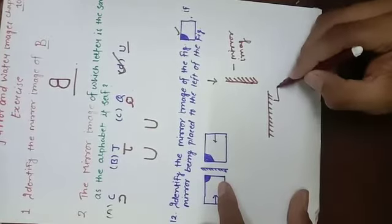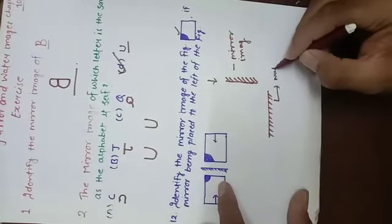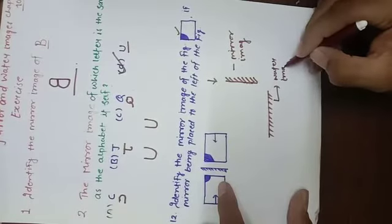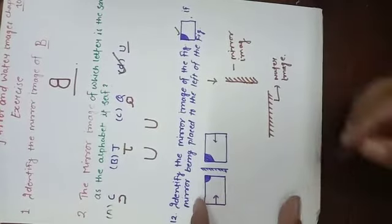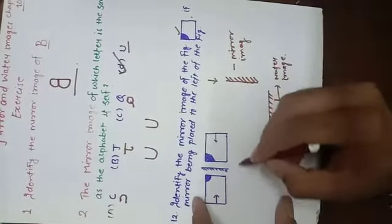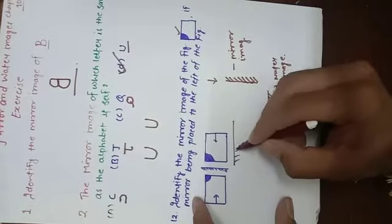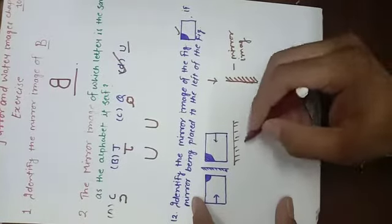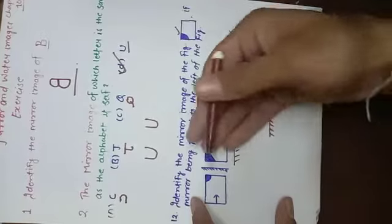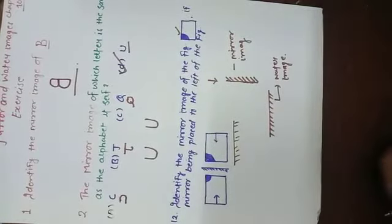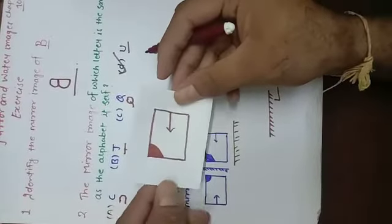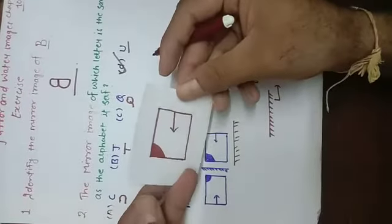But if the symbol is given like this, then you will find out the water image. So if it is given like this in the question, you will have to find out the water image. The water image means you just turn the paper from the top.